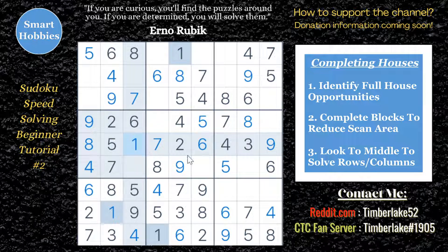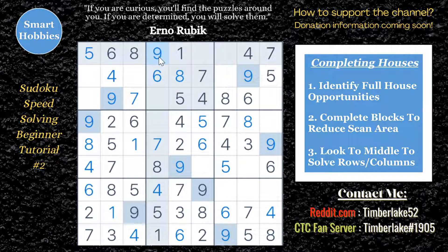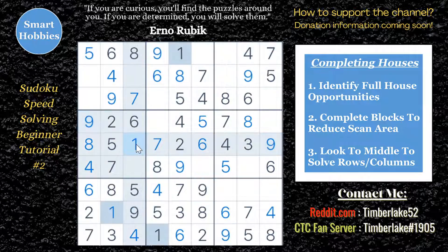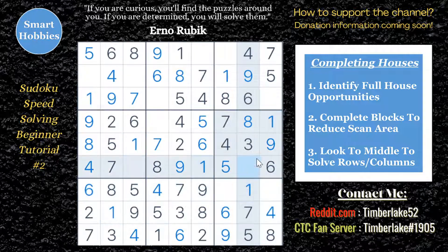So in part two, what I'm trying to get at is you want to be able to start solving for these full houses. Train your eye to spot them so you can really quickly finish out a block, a row, or a column. The only time you want to deviate from the ordinal solving method during speed solving is when you see a full house.